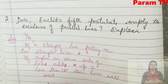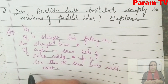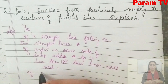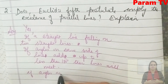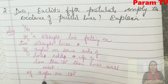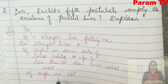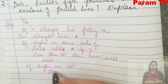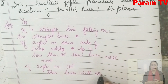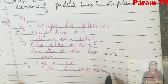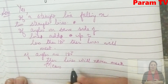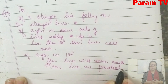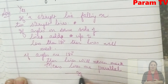That is what the 5th postulate says. And the conclusion from this is: if angles add up to 180, then lines will never meet — they will not meet anywhere. Which means the lines are parallel.